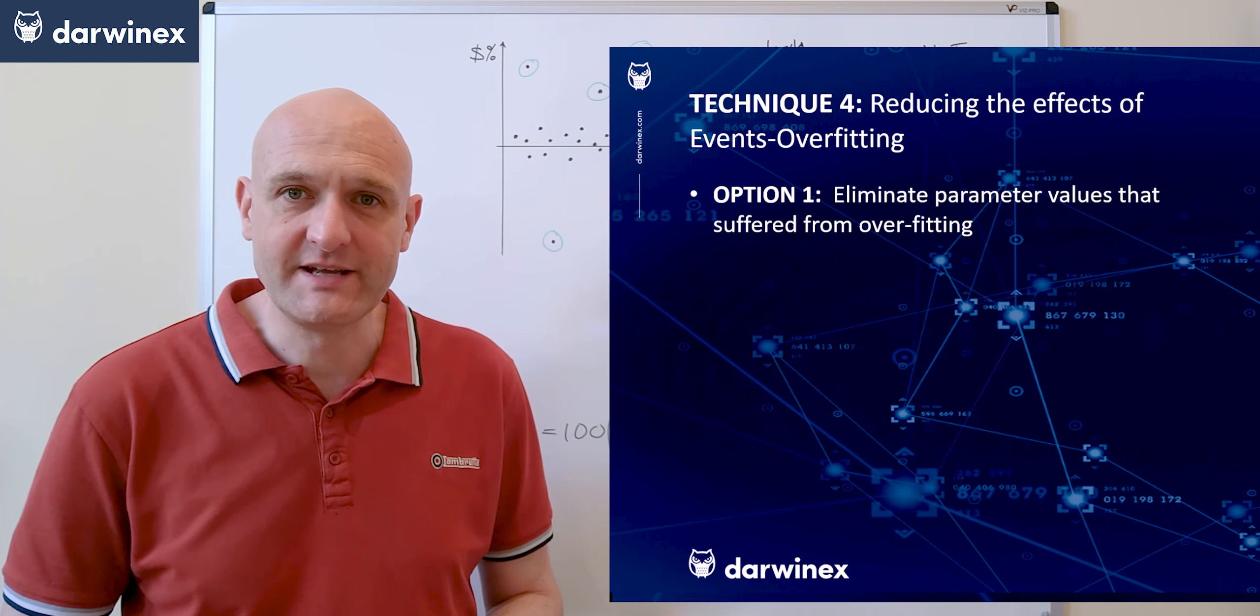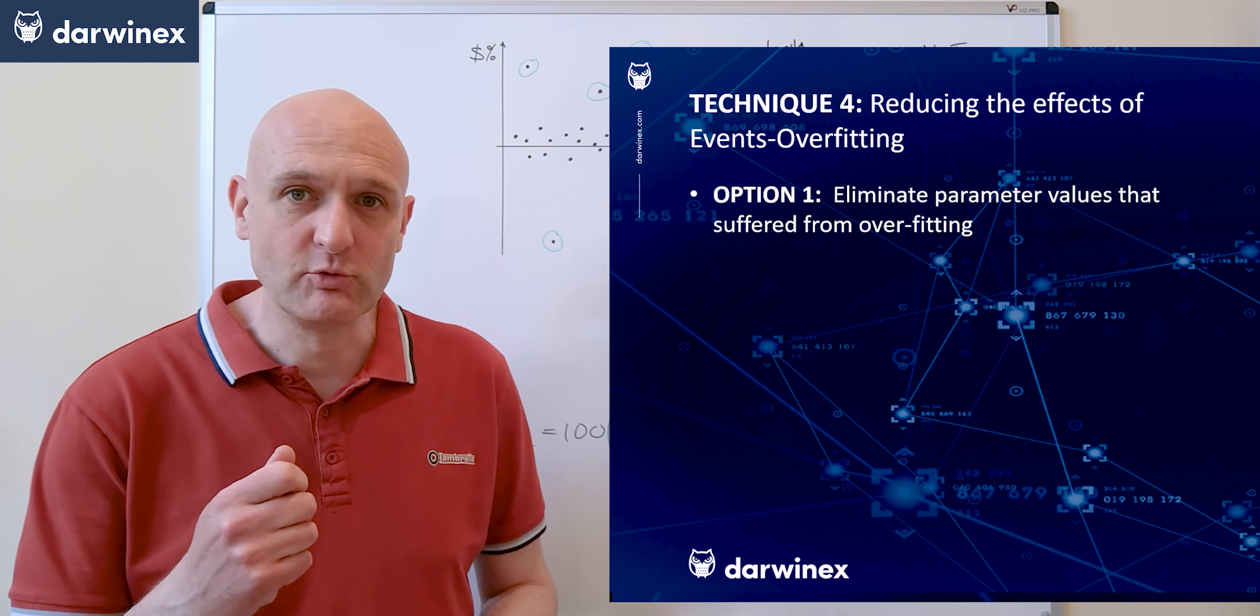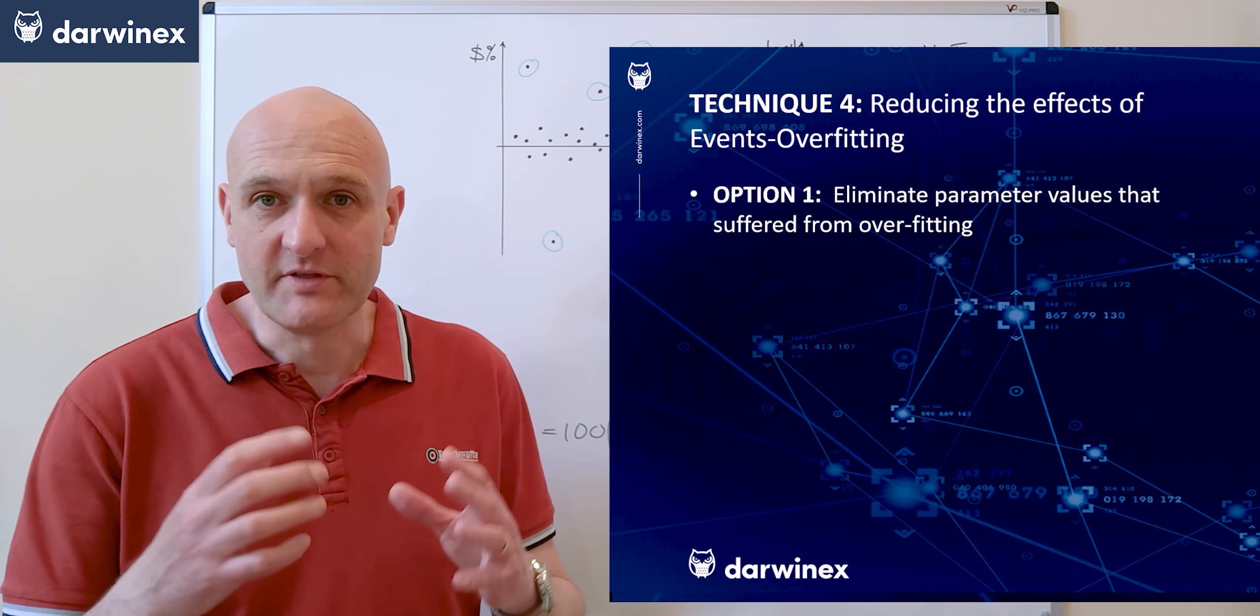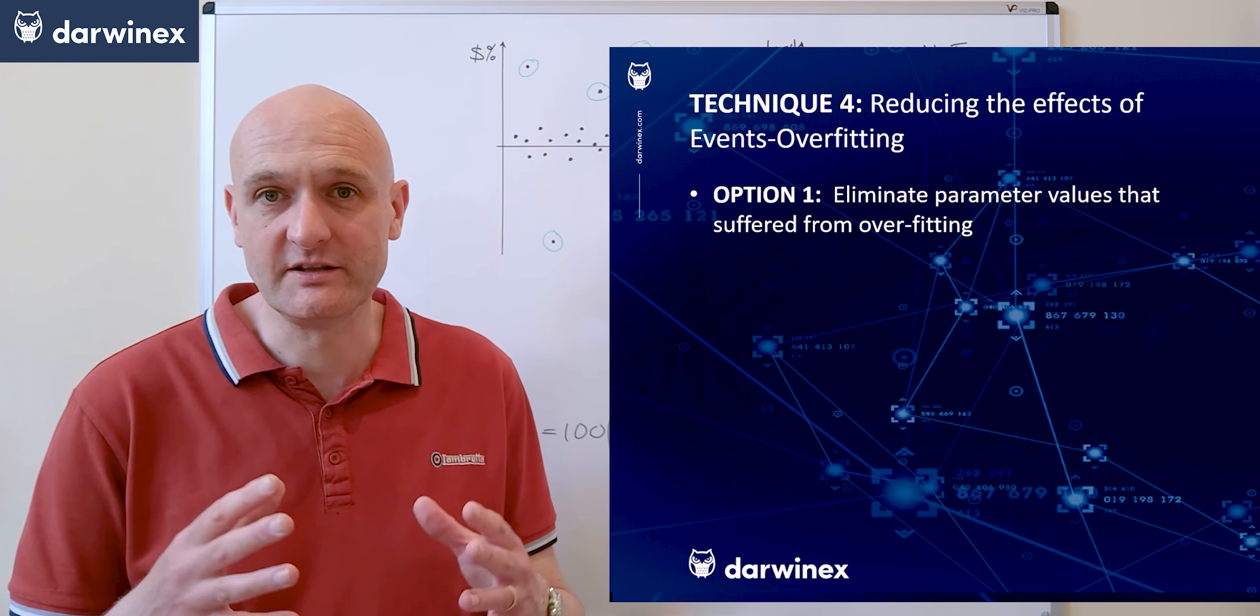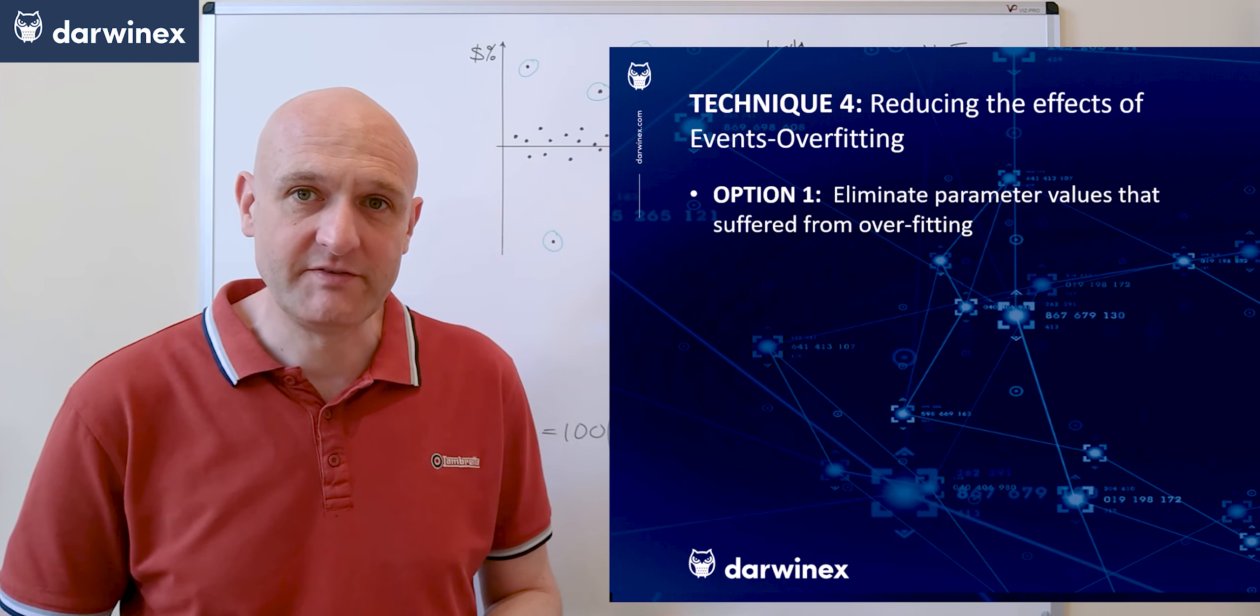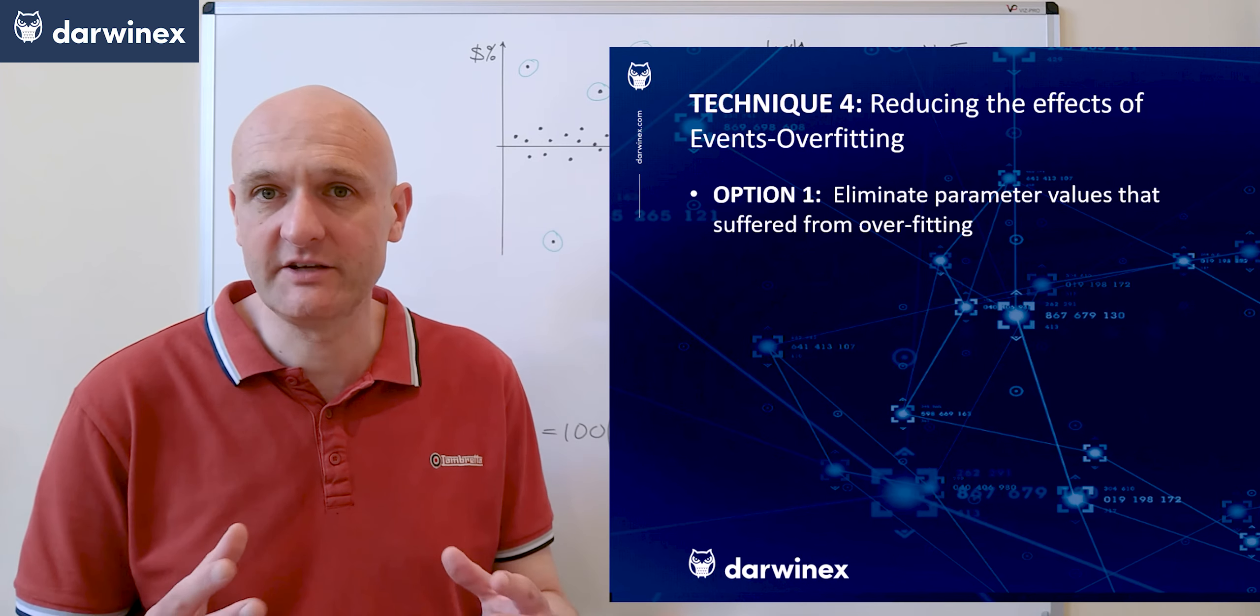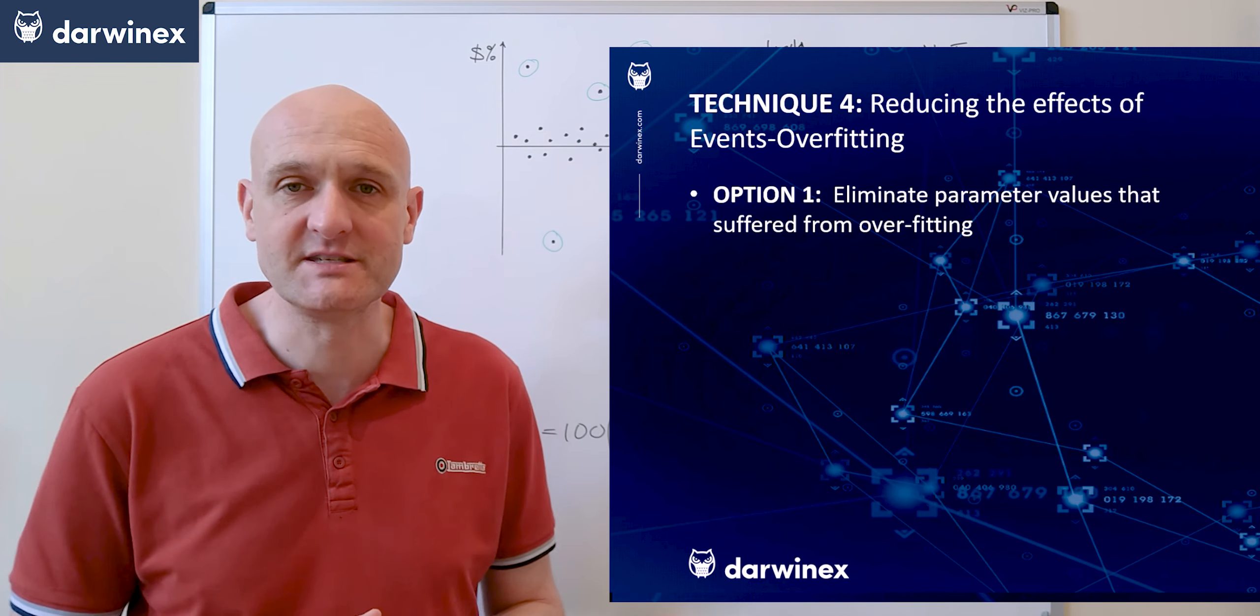And if this score was greater than a certain threshold, so in my case I used 12, then it would be eliminated from the optimization and the easiest way of doing that is simply returning the value of zero from onTester. Otherwise if it isn't overfitted then you simply calculate your performance metric in the normal way and return that value instead.